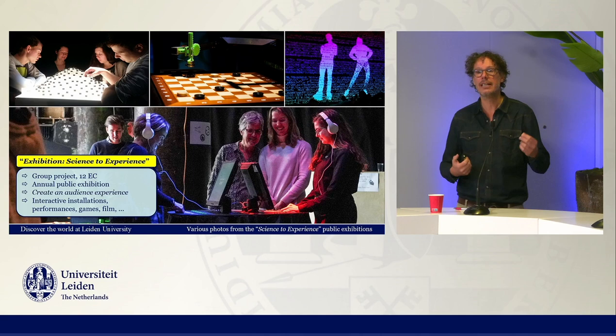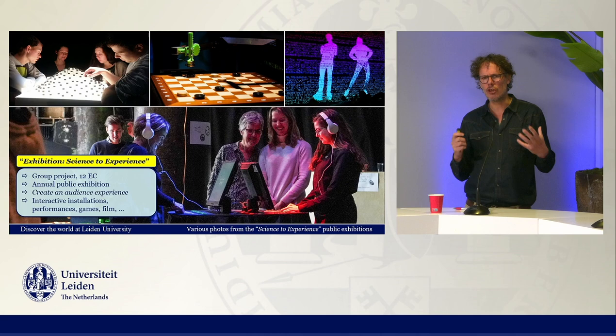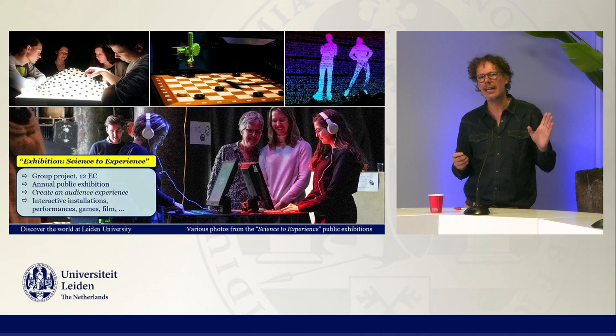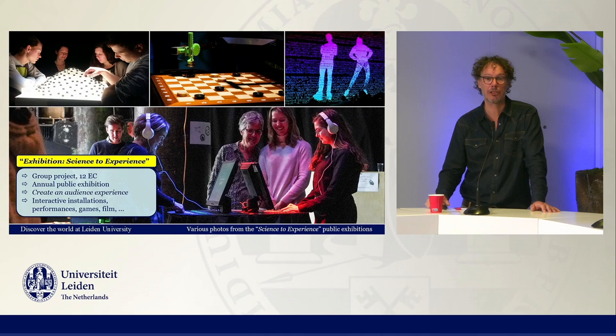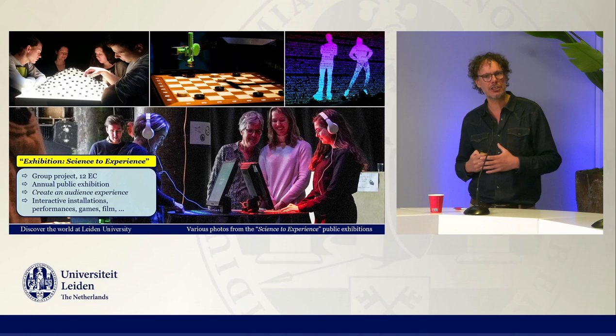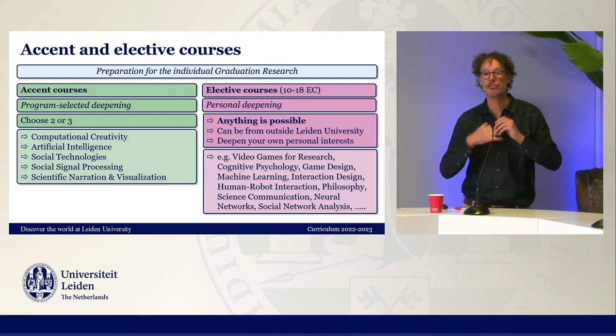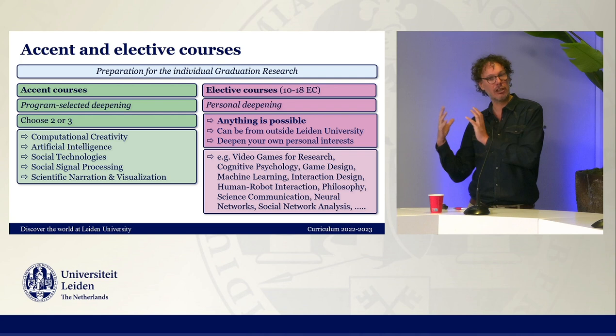The first year is really about doing compulsory courses and learning all the things we find important as a basis. But the second year is where every student takes a more personal approach. To complete the program, you have to do a graduation research project — your own actual academic research, very often published as well. To prepare for your personal graduation research, students can do accent courses. They have to do several accent courses — courses that we organize and they can choose.